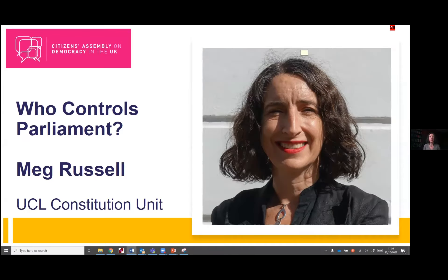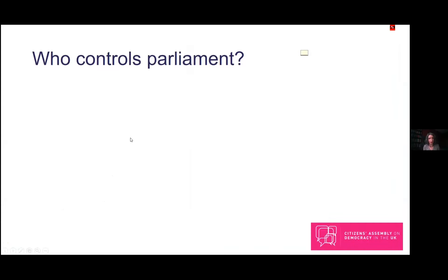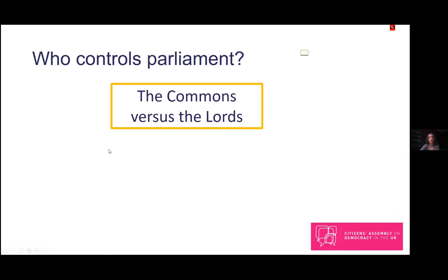In the previous talks you've heard about what parliament does, how it holds government to account, and how that accountability feels from the point of view of government. In this last talk I want to ask a fundamental question about who controls parliament itself. I suggest there are three ways in which we might ask who controls parliament, each of which I'll speak about in turn.